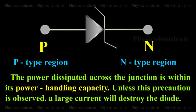Hence, the power dissipated across the junction is within its power handling capacity. Unless this precaution is observed, a large current will destroy the diode.